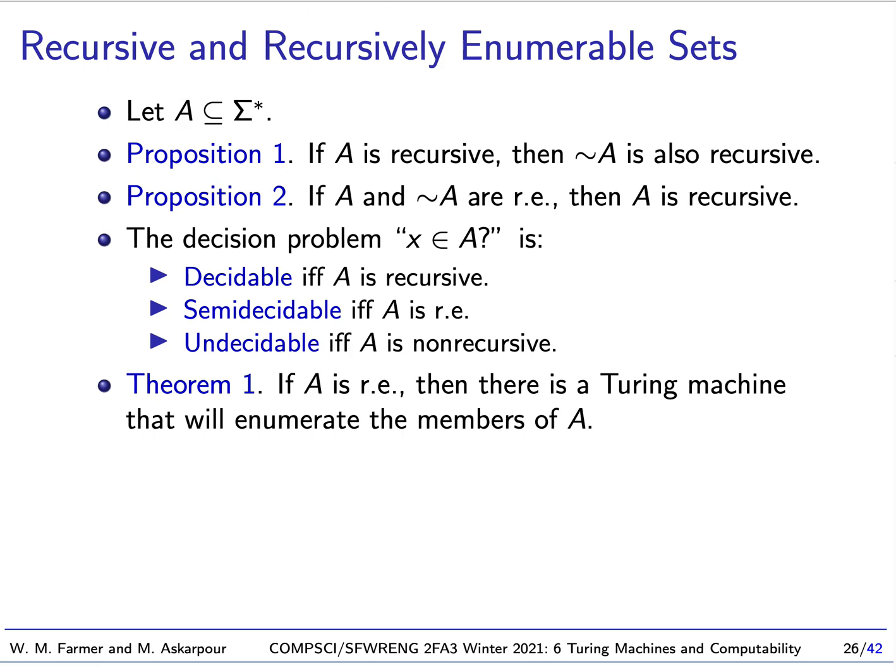We have a couple interesting propositions here. The first says if A is recursive, then the complement is also recursive. This is pretty easy to show. The second is that if A and the complement are both r.e., then A is recursive. This is easy to show if we use Theorem 1. Theorem 1 says that if A is recursively enumerable, then there is a Turing machine that will enumerate the members of A.